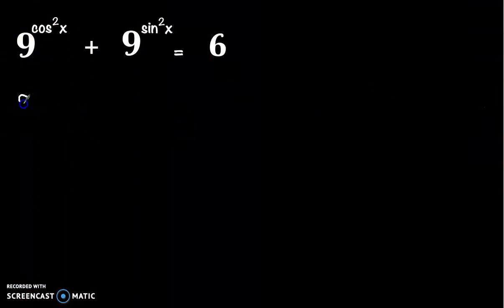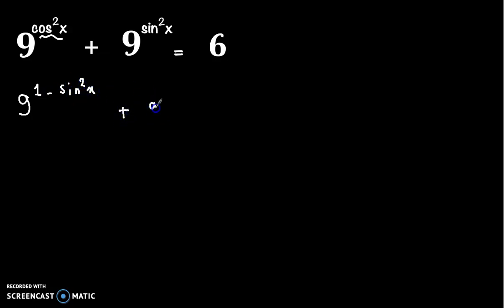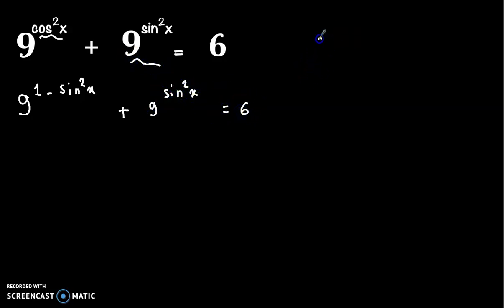First, we have cosine squared x equal to 1 minus sine squared x, so we substitute to get 9 to the power (1 minus sine squared x) plus 9 to the power sine squared x equals 6. We know that a to the power (m minus n) equals a to the power m divided by a to the power n.